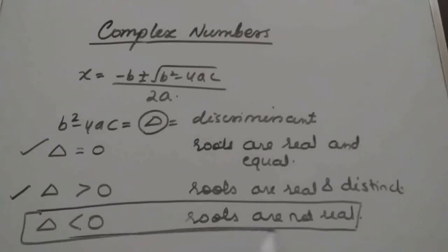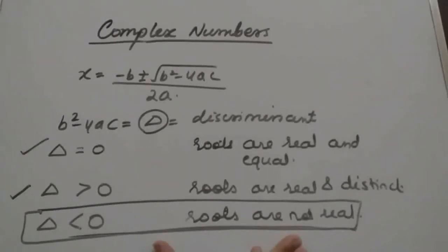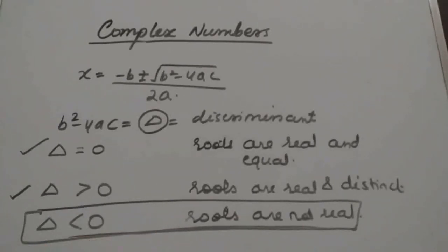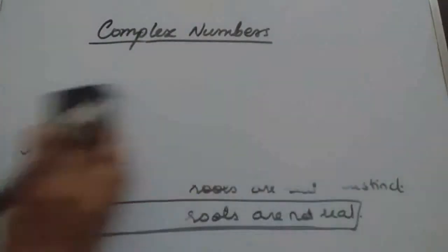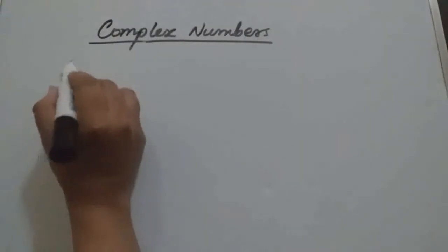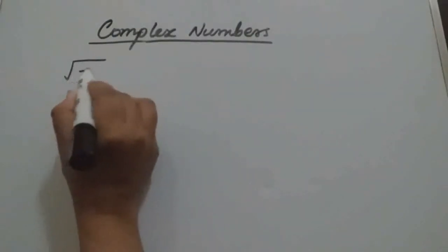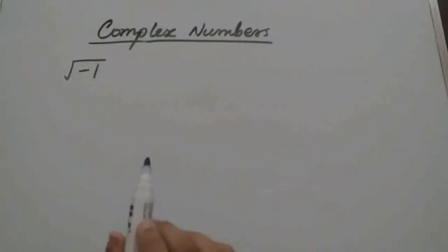This particular answer — roots are not real — troubled mathematicians a lot. When delta is less than 0, what will be the roots? So they investigated and discovered: let this be an imaginary number. They proposed that the root of minus 1 exists.